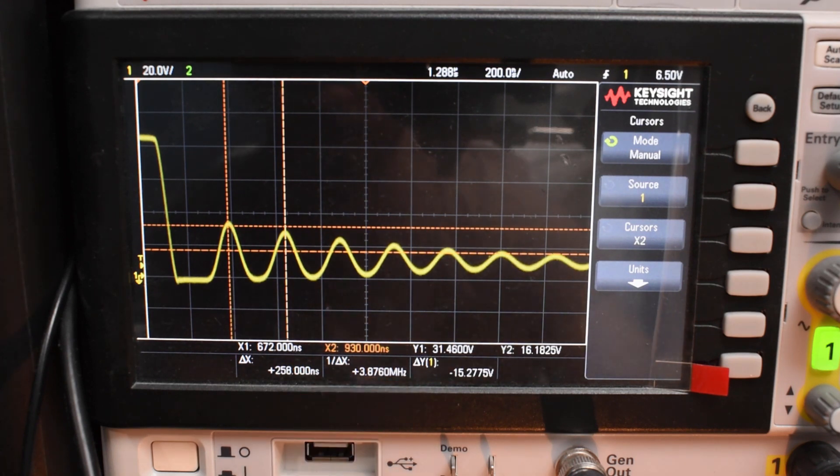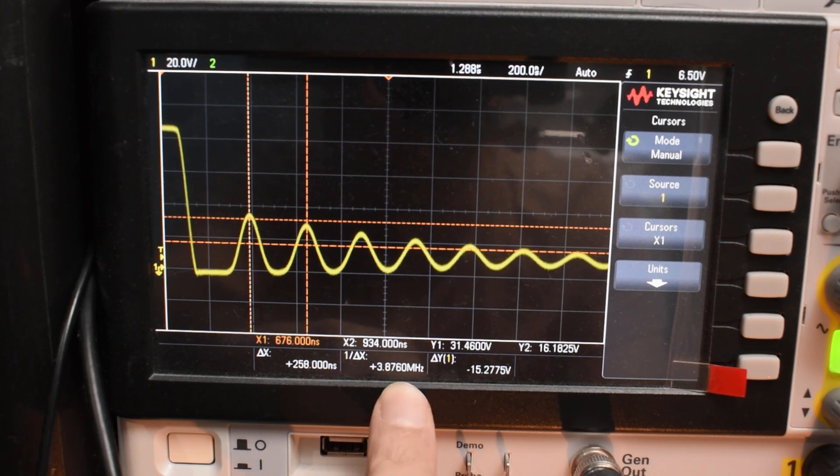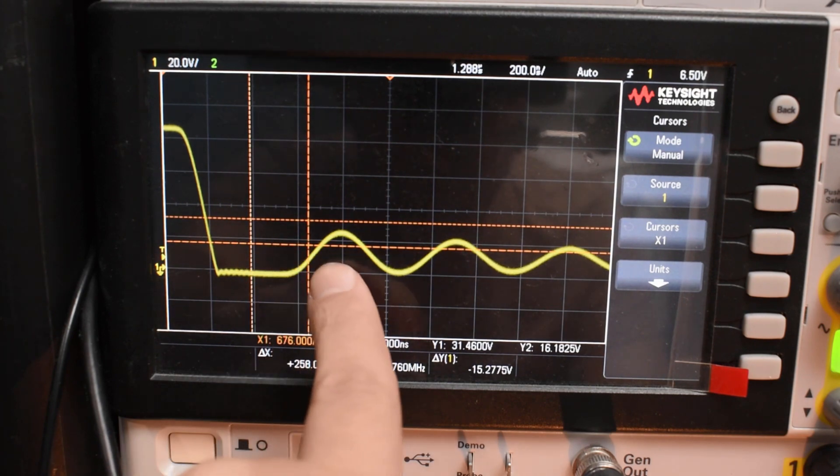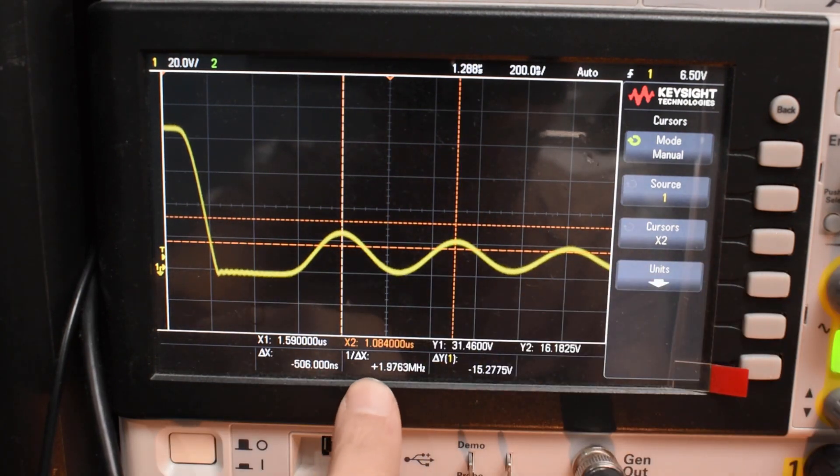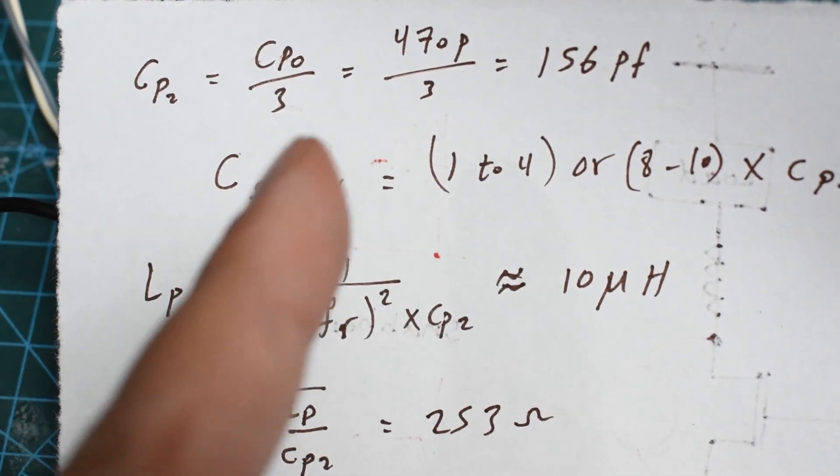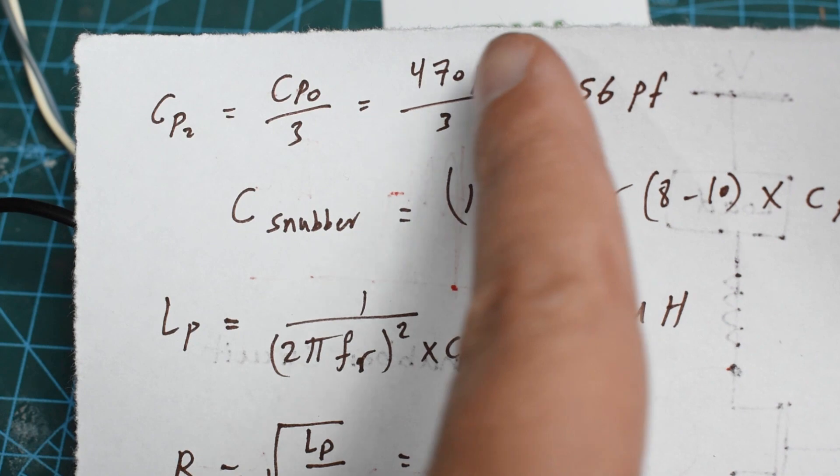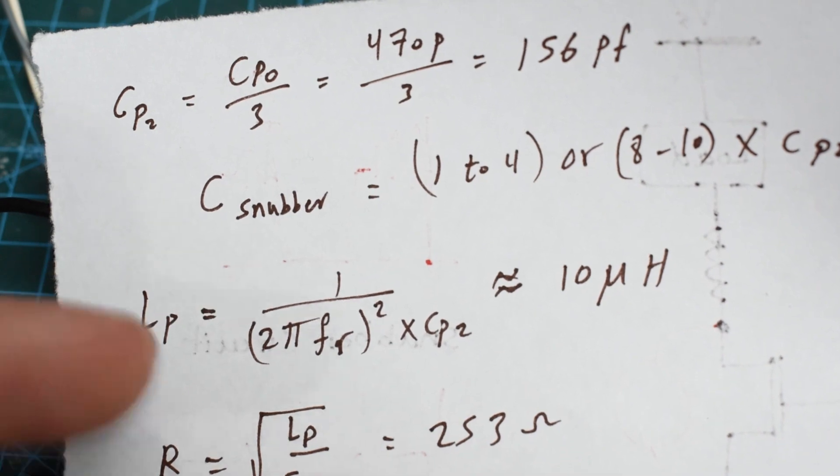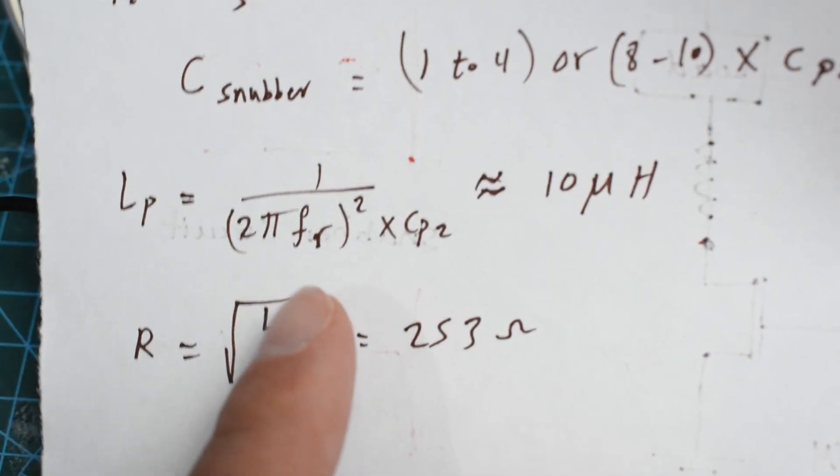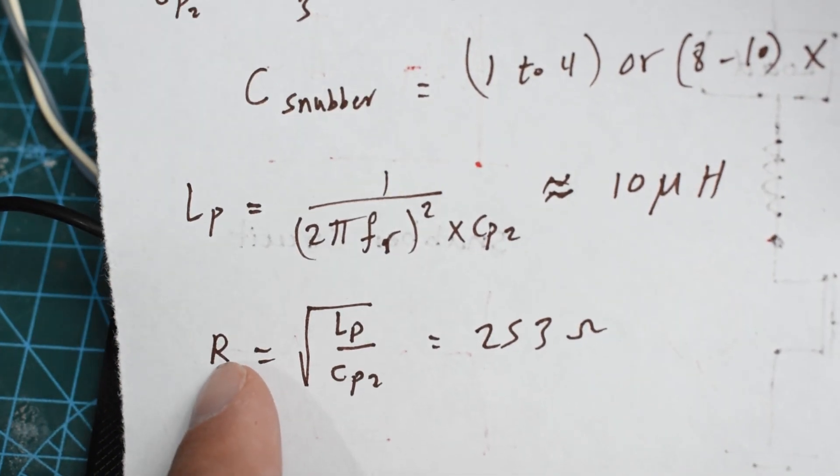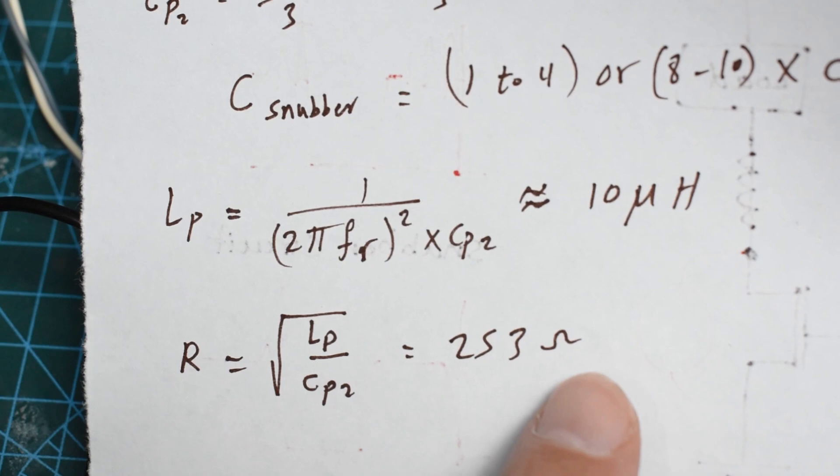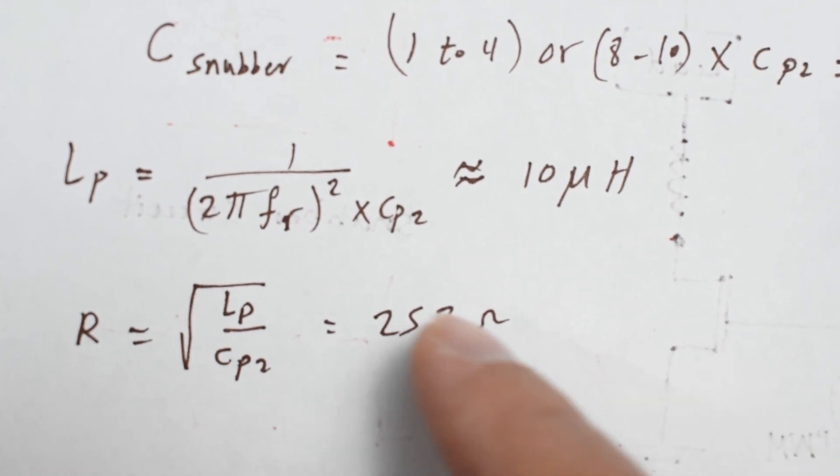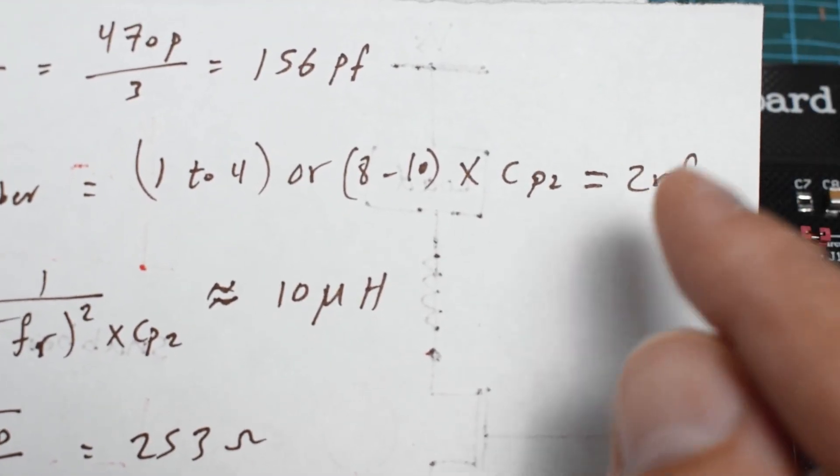We will start inserting random values of capacitors to decrease this frequency by a factor of 2. By putting 470 pF, the ringing frequency is about 1.97 MHz which is about half. By the same set of equations, we can estimate the parasitic capacitance as 156 pF. And the parasitic inductance is about 10µH which is already what we have in our circuit. The resonance impedance is 253 ohms which might be considered as high and its loss is also high.